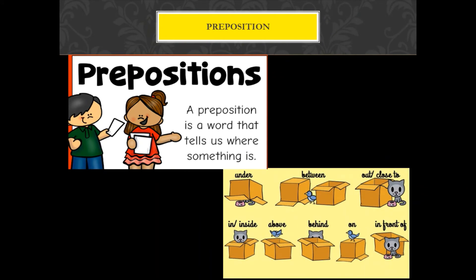Now we will discuss prepositions. What is a preposition? A preposition is a word that tells us where something is. For example, this cat — there is a cat and there is a box. Where is the cat? Sometimes the cat is inside the box, sometimes above, sometimes behind, sometimes under, sometimes close to the box, sometimes in front of the box. All these words describe the position of the cat. This type of word is a preposition.